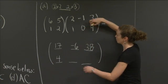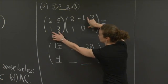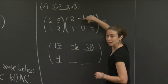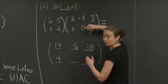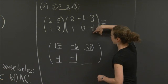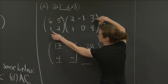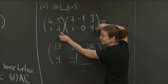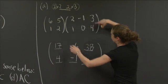And then the next column, row 2, column 2, 1 times negative 1 is negative 1, 2 times 0 is 0, so I get a negative 1. And then the last column, 1 times 3 is 3, 2 times 4 is 8, so I get 3 plus 8, so I get 11.